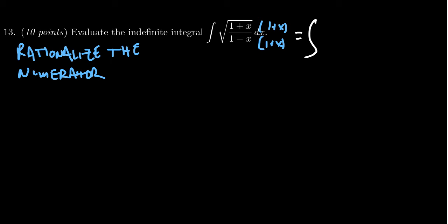You're going to get a 1 plus x squared on top. And you're going to get, when you FOIL it out on the bottom, you're going to get a square root of 1 minus x squared on the bottom. And so you'll notice that if you take the square root of 1 plus x squared on top, the square root disappears.